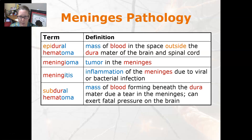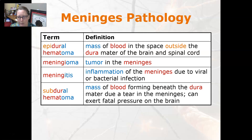On meninges pathology: an epidural hematoma is a mass of blood in the space outside the dura mater of the brain and spinal cord. A meningioma is a tumor of the meninges. Meningitis is an inflammation of the meninges that can be due to a viral or bacterial infection. A subdural hematoma is a mass of blood forming beneath the dura mater due to a tear in the meninges; it can exert fatal pressure on the brain.